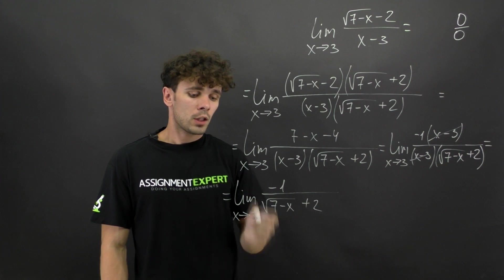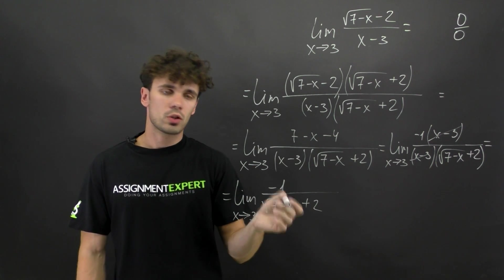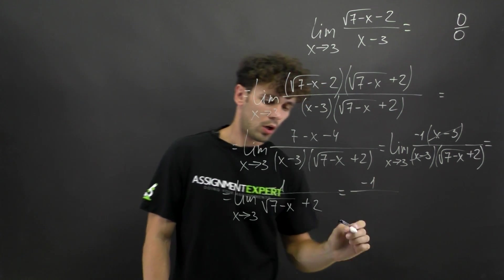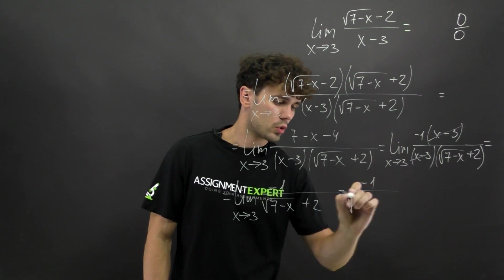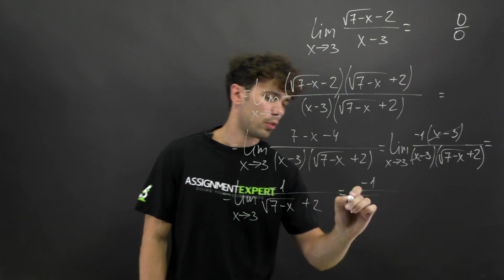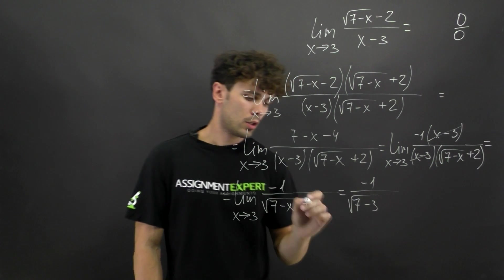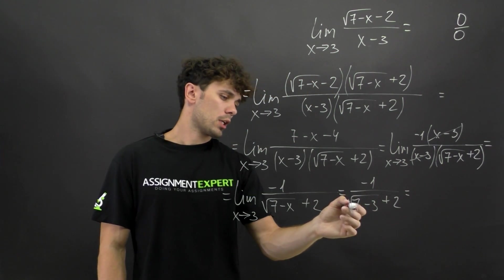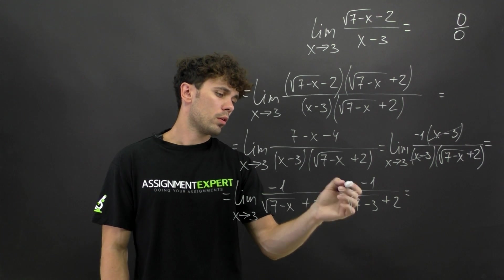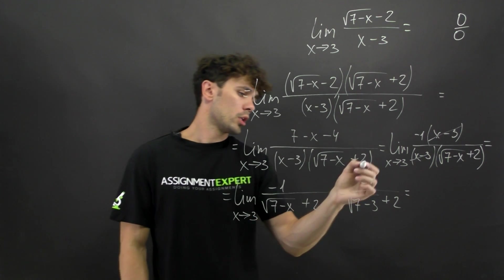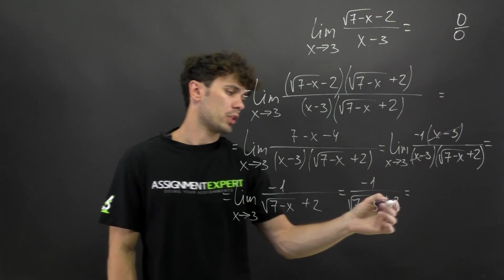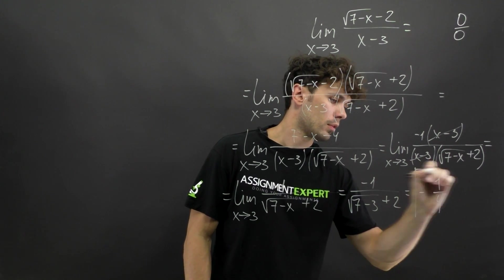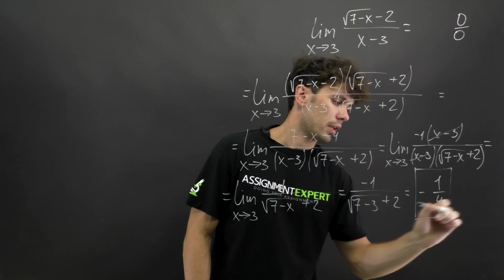Now we can substitute 3 into our limit. We get negative 1 over the square root of (7 minus 3) plus 2, which gives us negative 1 over the square root of 4. And that's the answer.